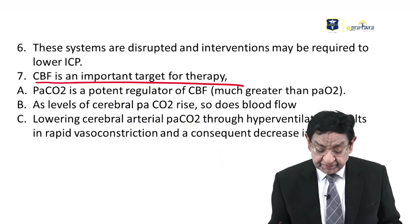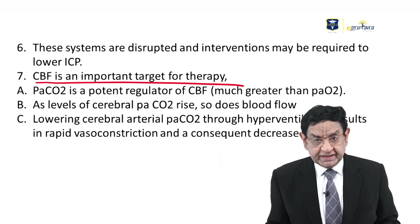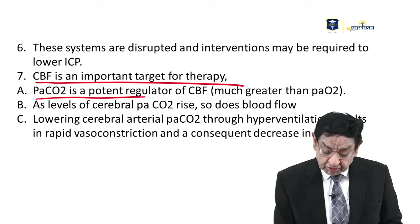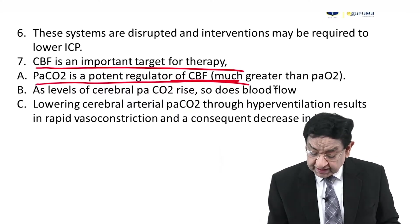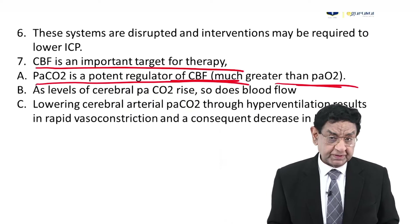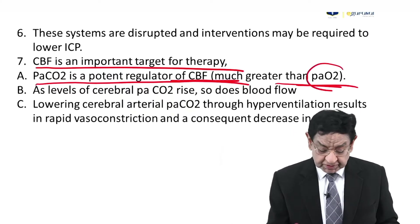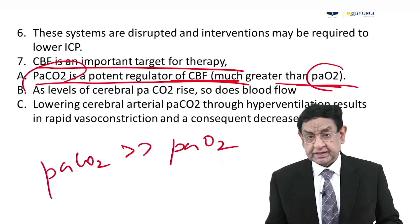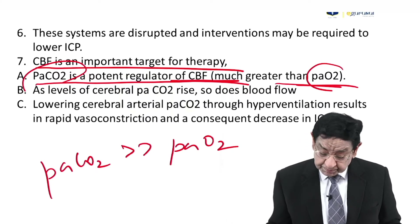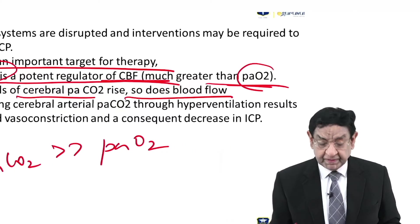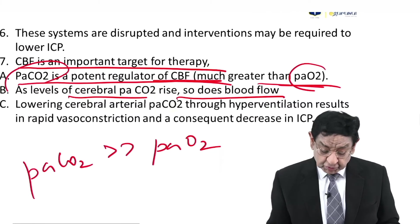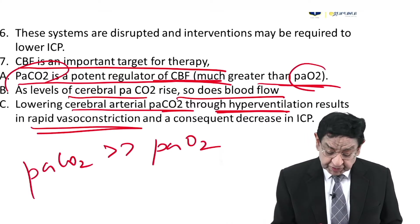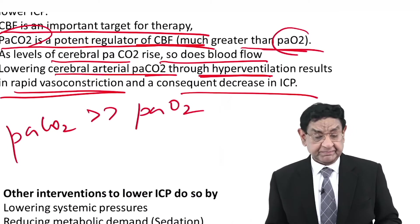Cerebral blood flow is a very important target in therapy. That's why whenever we are treating a case of raised ICP, we always target cerebral blood flow. CO2 is a constant regulator of cerebral blood flow — far greater than PaO2. PaCO2 has far more effect on controlling raised ICP compared to O2. So if the level of PaCO2 rises, so does blood flow. If we can reduce PaCO2 by hyperventilation, this will result in vasoconstriction, which will lead to reduced ICP.